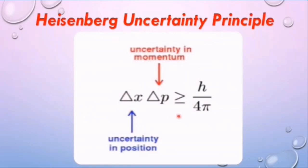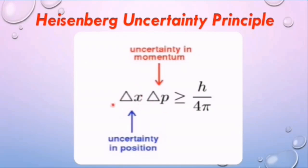Heisenberg's uncertainty principle: due to the matter-wave nature of all quantum objects, Heisenberg stated a principle known as the Heisenberg uncertainty principle, which is a fundamental property of quantum systems. The principle states that it is not possible to determine accurately both the position and momentum of a particle at the same time. The product of uncertainties in position and momentum of a particle is greater than or equal to h over 4π, where h is Planck's constant.